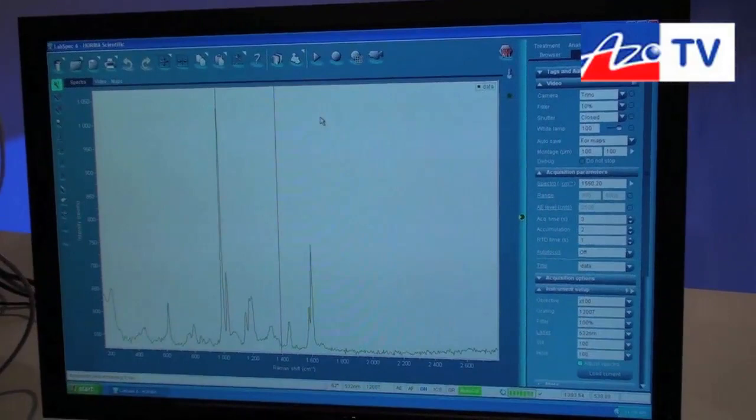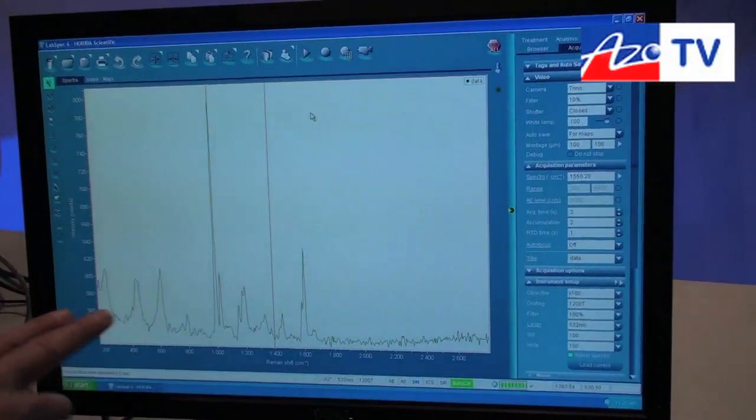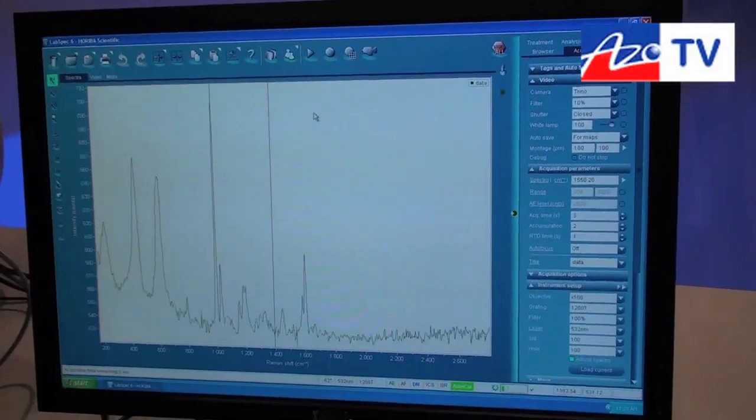This is the Raman spectrum that we see and what's nice about this is that as we go in depth, I'm going to move the stage to make the beam focus inside the sample, then the spectrum is changing and we see these two peaks arising and the features of the polymer decreasing.